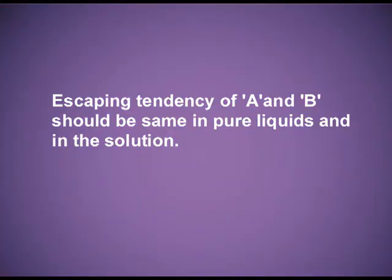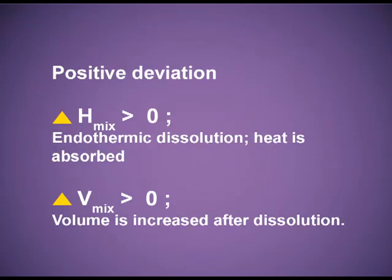For solutions showing positive deviation, the solute-solvent interactions are weaker. So the escaping tendency of A and B will be greater when in solution compared to pure A or pure B. As a result, delta-H mixing will be greater than zero, delta-V mixing will also be greater than zero, and the partial vapour pressure of each component will be more than the vapour pressure of the pure component.